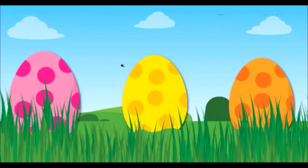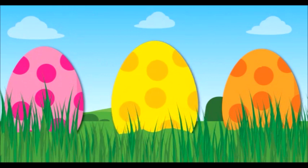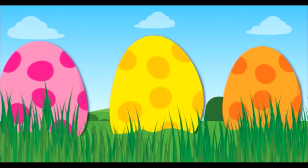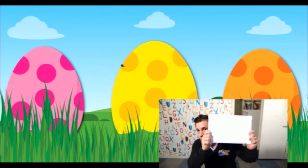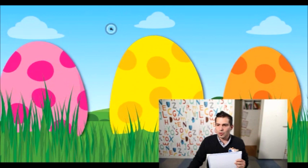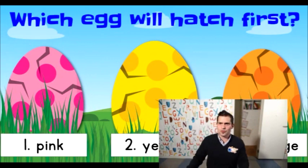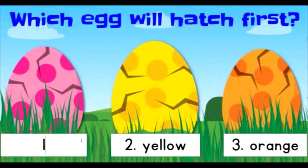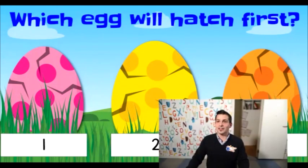Now if you have your whiteboard, please write number one, number two, or number three, depending on which one you think is going to hatch first. I did this activity with my students today for the first time and they loved it. They can write one, two, or three on their whiteboards and get points for this activity.